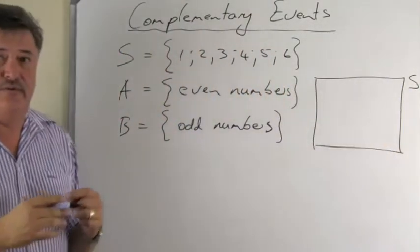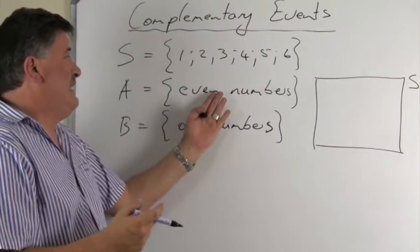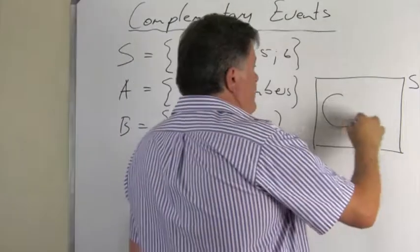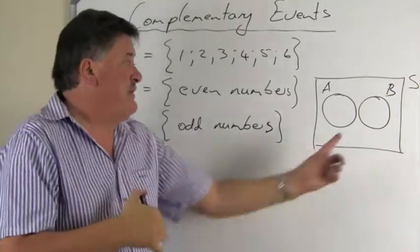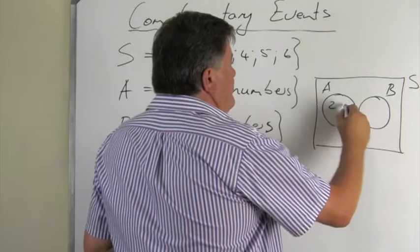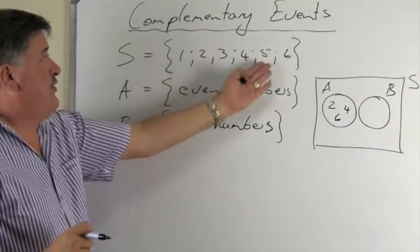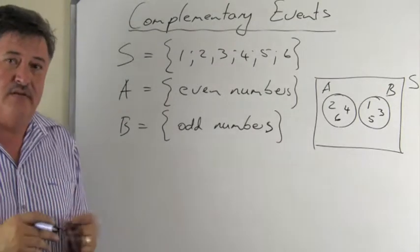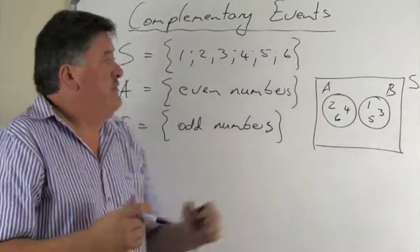If we draw a Venn diagram to represent this situation, you will agree that even numbers and odd numbers have no outcomes in common. So the two events will not share that overlapping part. The even numbers are two, four, and six from our sample space of one through six. The odd numbers are one, three, and five. Are there any outcomes missing? One, two, three, four, five, six — none are missing.